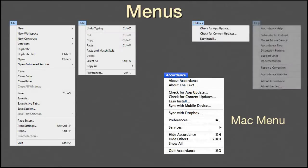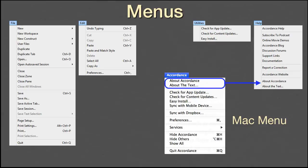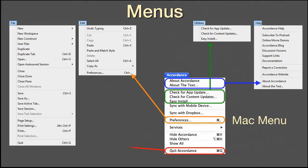For instance, the arrangement of menu items shows some of our programmers' close attention to details. Since Windows doesn't typically have a program menu, items under the Accordance menu on a Mac were distributed into menus appropriate for Windows. About Accordance and About the Text are in the Help menu. Application and Content Updates are in a Utilities menu. Preferences is under the Edit menu. And Quit Accordance is under the File menu. What about Sync with Mobile Device and Sync with Dropbox? They are the only major Accordance features that won't be included in our first Windows release. However, we're working on them.